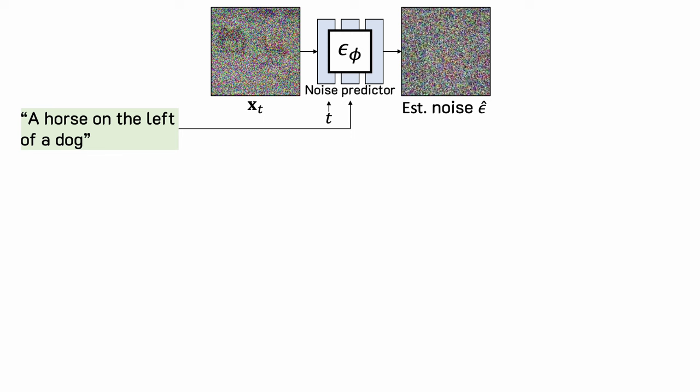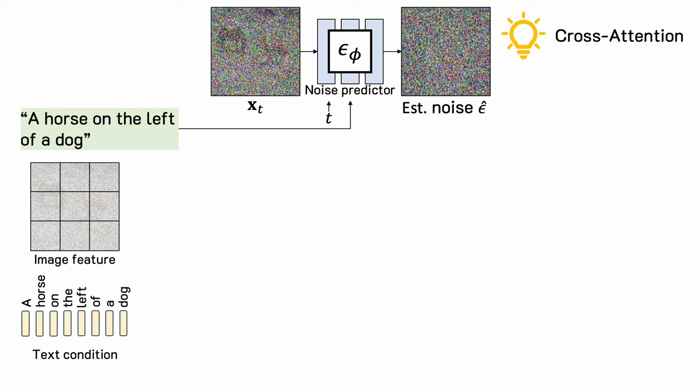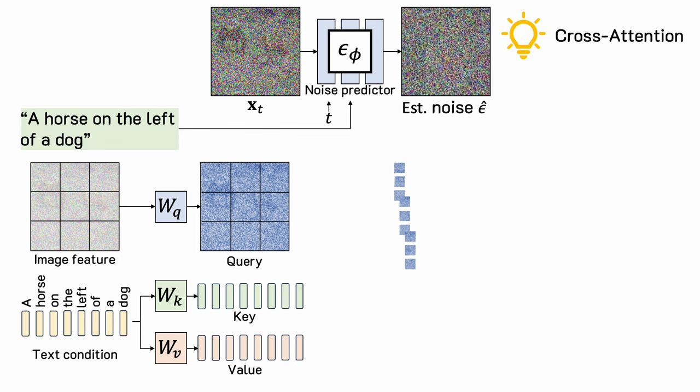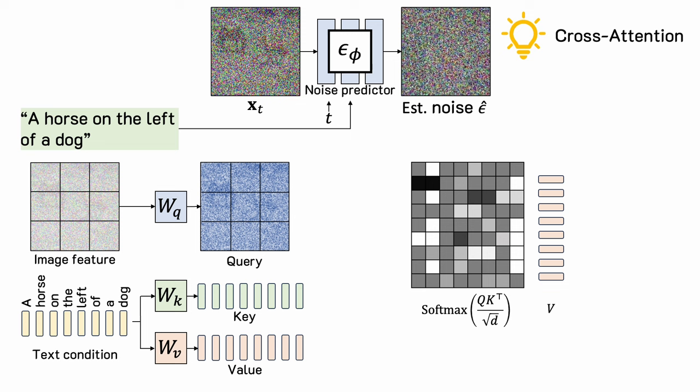Most methods use cross attention. We start with the image features and a sequence of text tokens. Our goal is to produce a new image feature, mixing the text and image information. We compute a query from the image features and a key and value from the text tokens. We then calculate the cross attention between the image and text, and use the attention weights to compute the weighted average of the values. We can rearrange the output and add them back to our image features, injecting the text information into the image features.